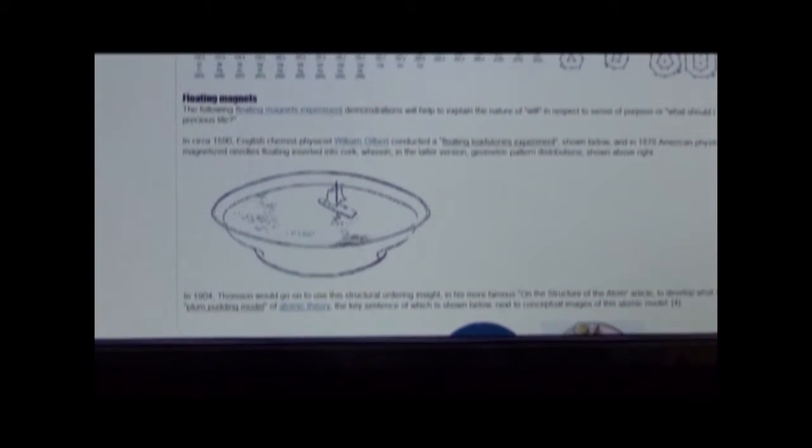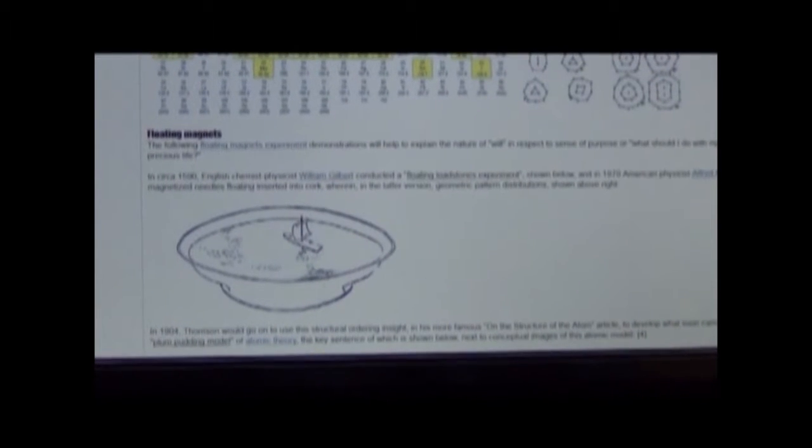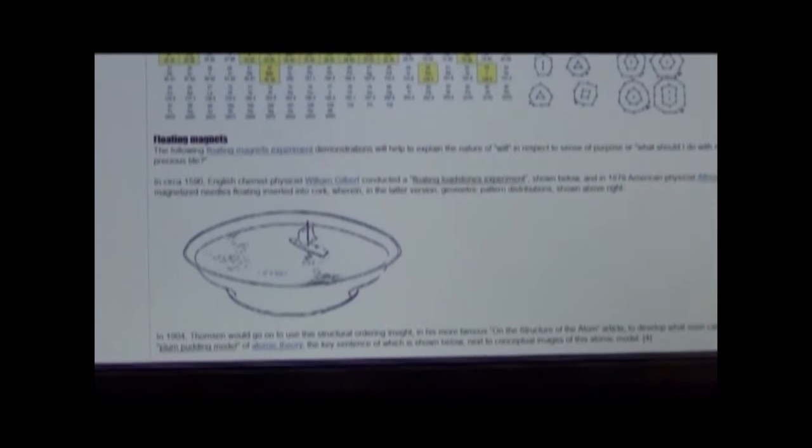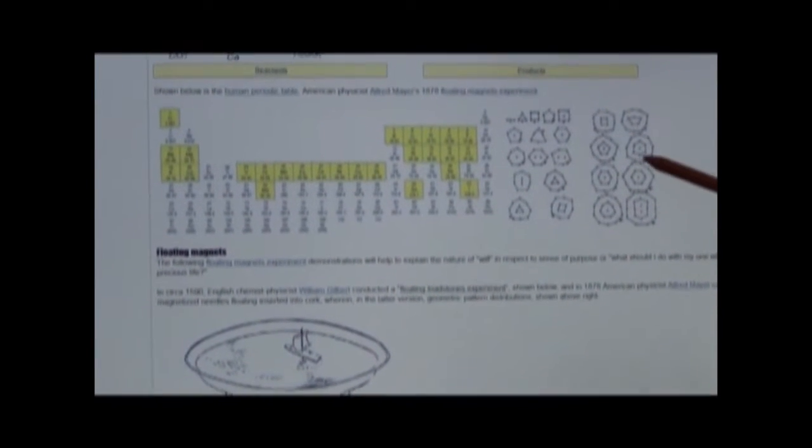So today we're going to do the experiment using neodymium magnets. The second guy who did the experiment was Alfred Mayer, he was an American physicist, and he found all these patterns when he did the experiment and used up to 20 magnets.